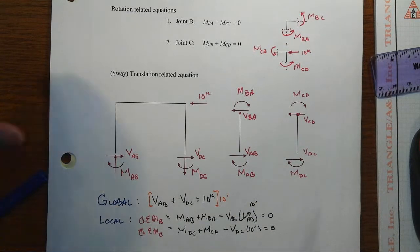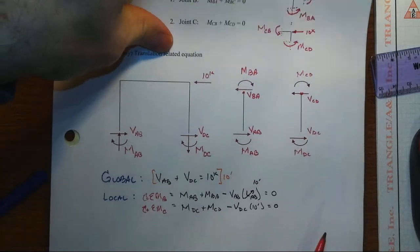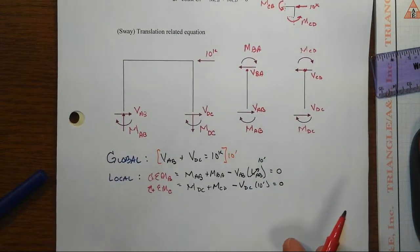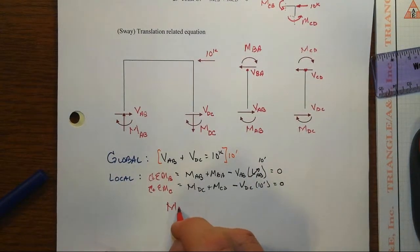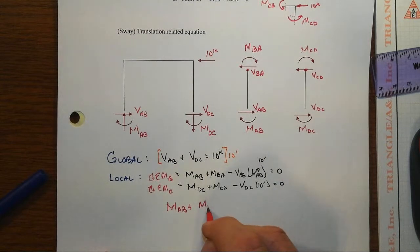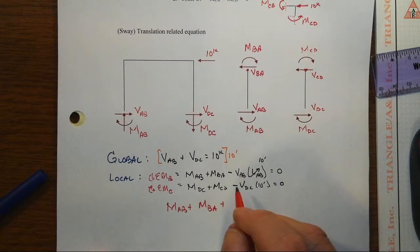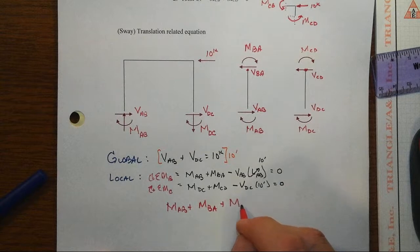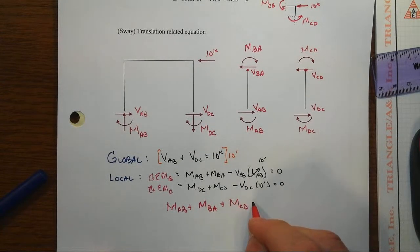That's going to ultimately be MAB plus MBA plus M, I'm going to rewrite this here, take the MCD first, sort of alphabetical approach, plus the MDC.